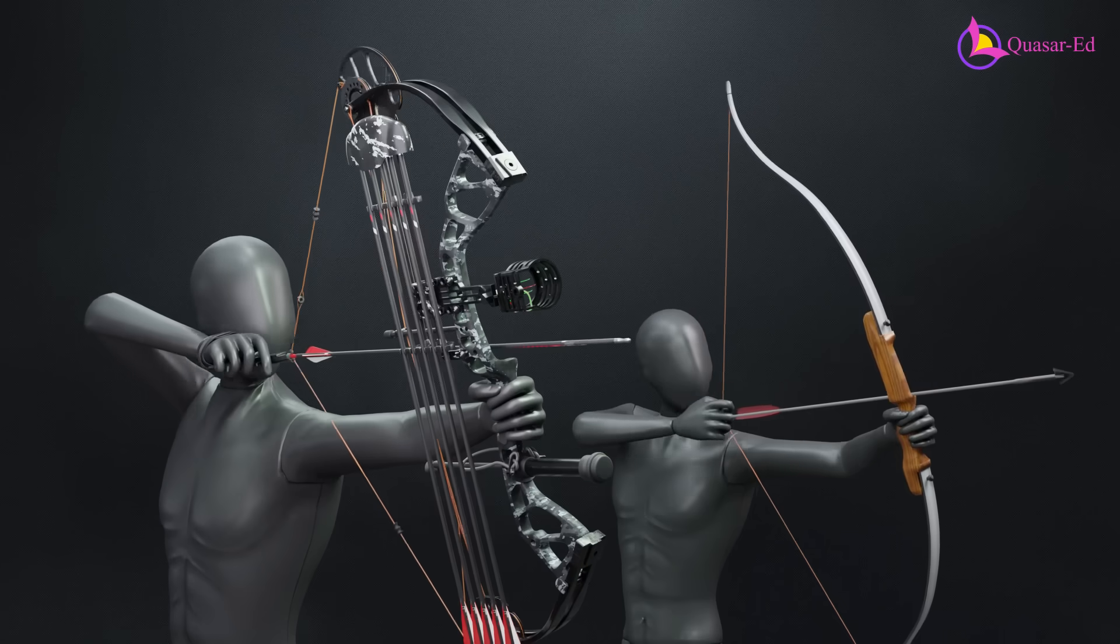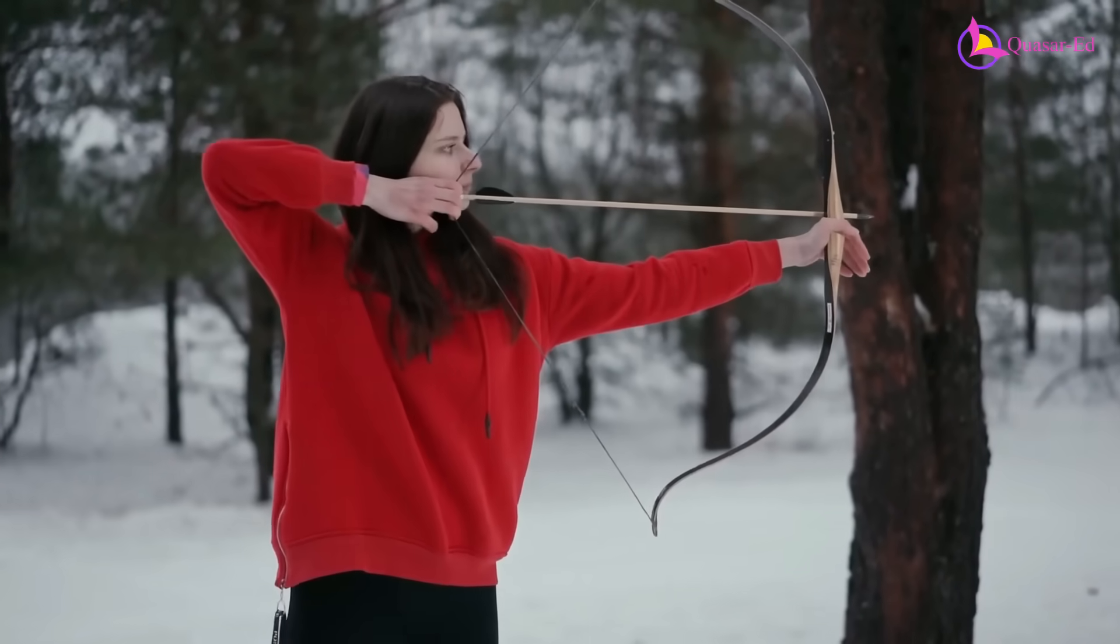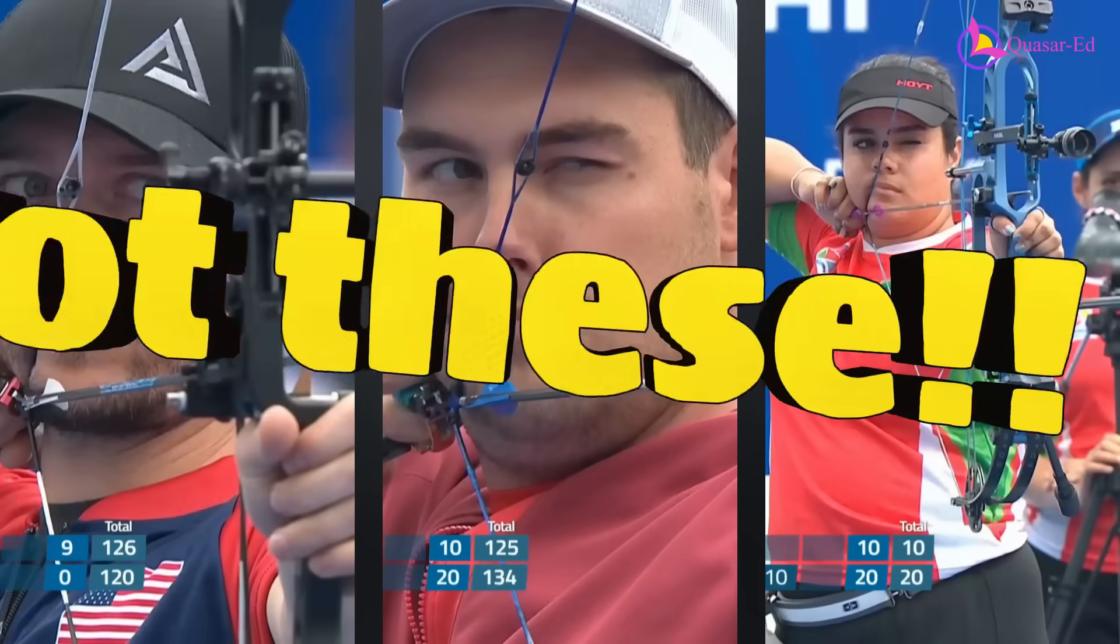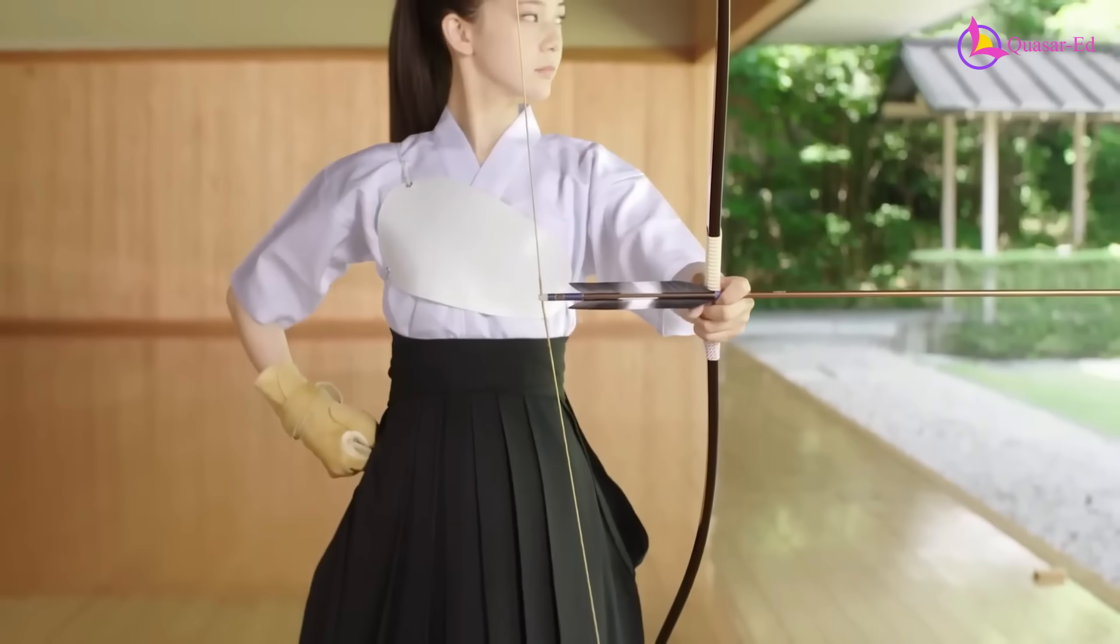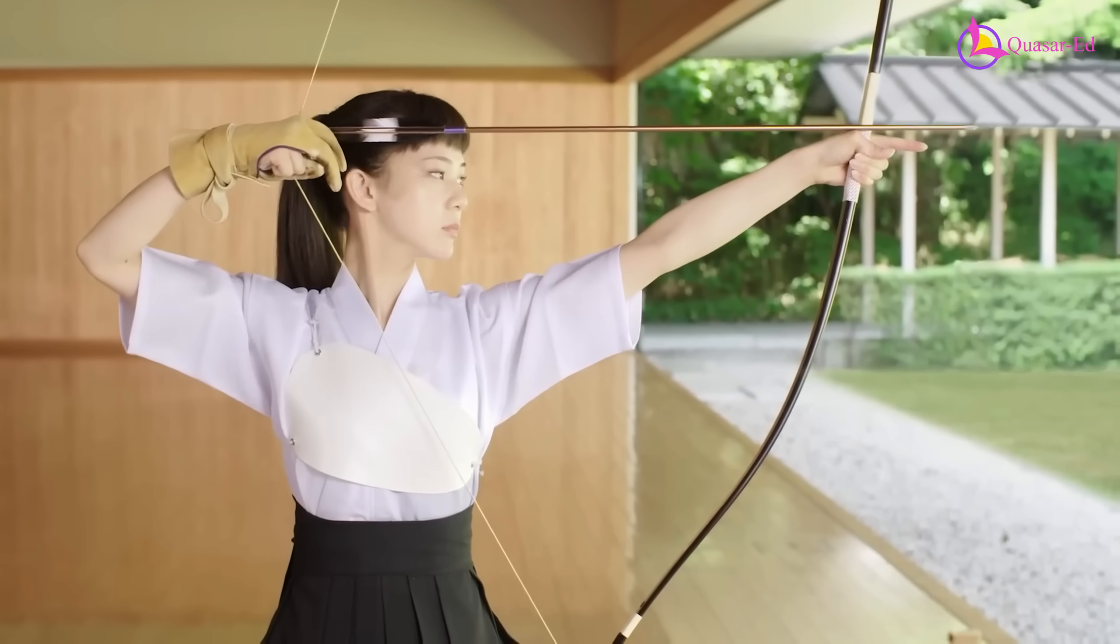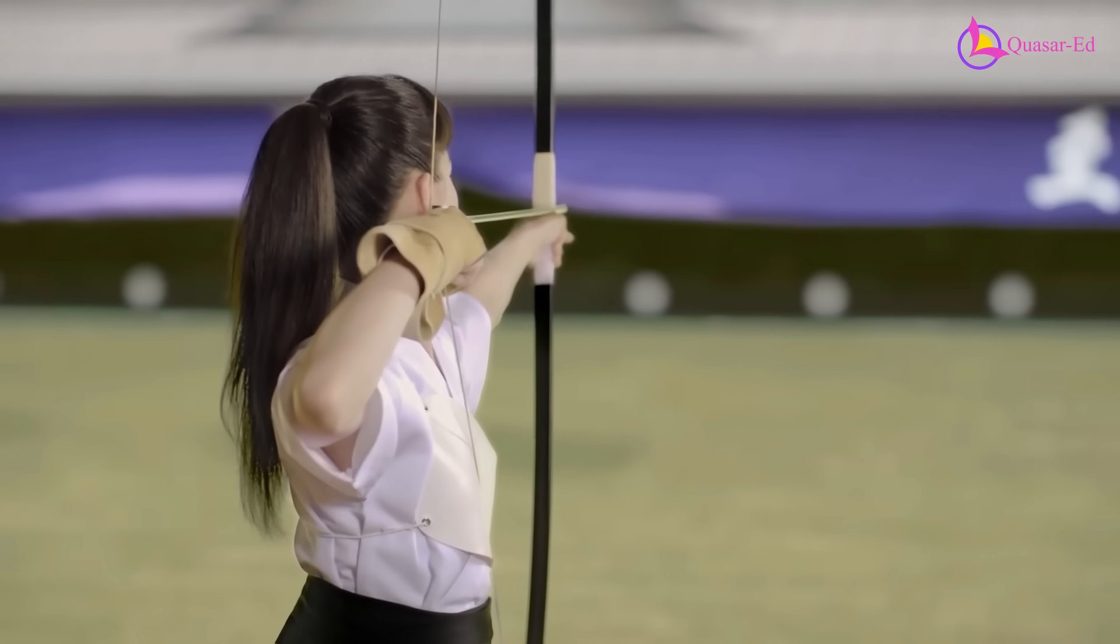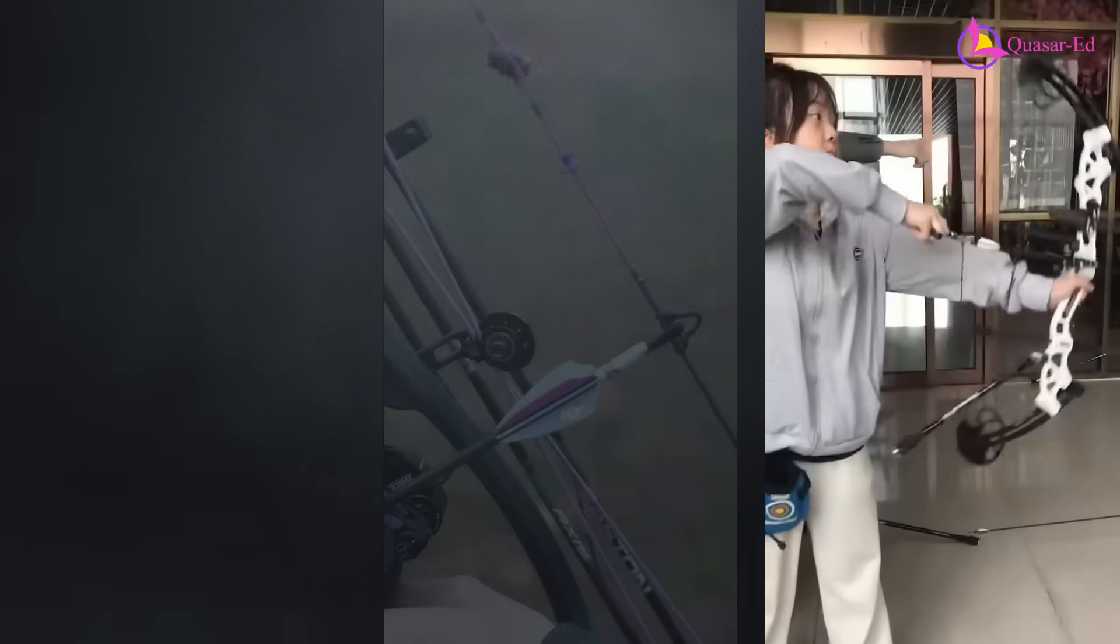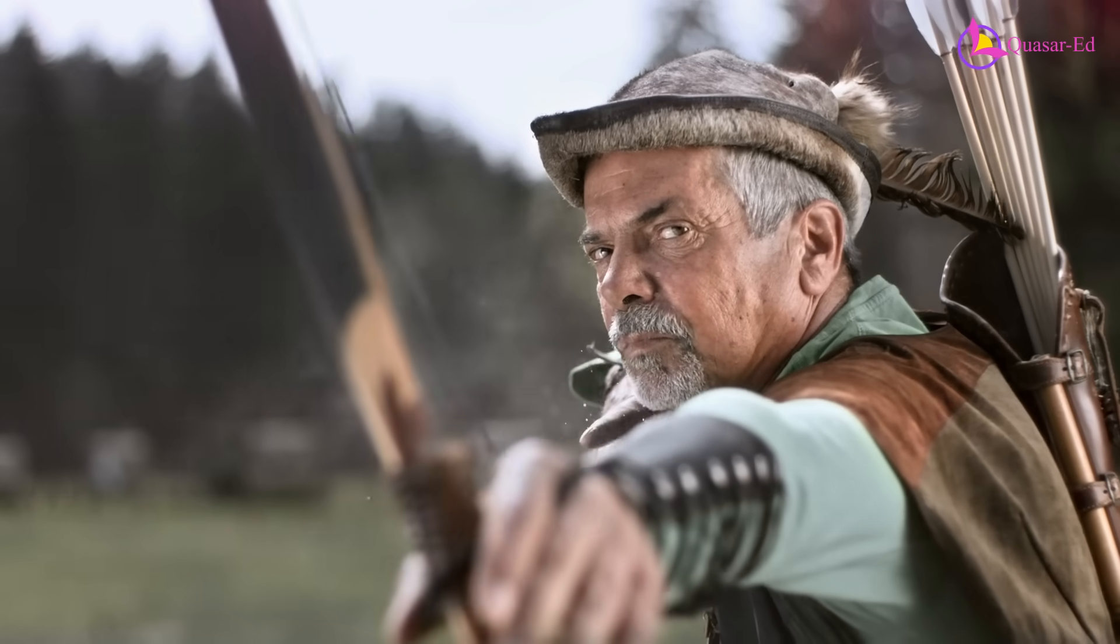While compound bows are powerful and precise, there's something undeniably cooler about traditional bows. They are pure, raw, and don't rely on a complex system of pulleys, cables, and sights. Just skill, instinct, and years of training. It's archery in its purest form, where every shot is a test of patience, focus, and strength. Mastering a recurve or longbow takes dedication, but that's what makes it so rewarding. While compound bows make things easier, there's pride in hitting your mark with nothing but your own skill.